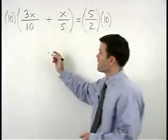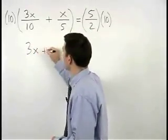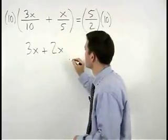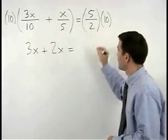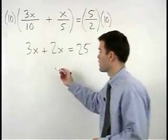On the left we have 3x plus 2x and on the right we have 25. So simplifying the left side of the equation,